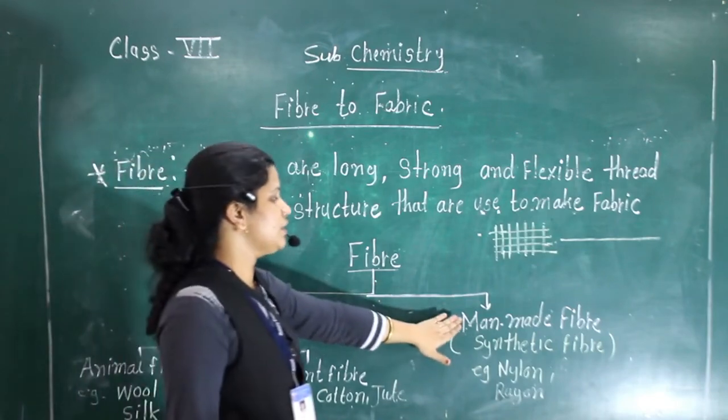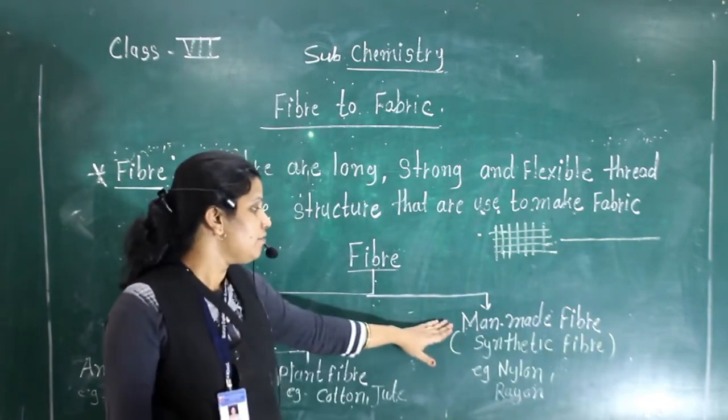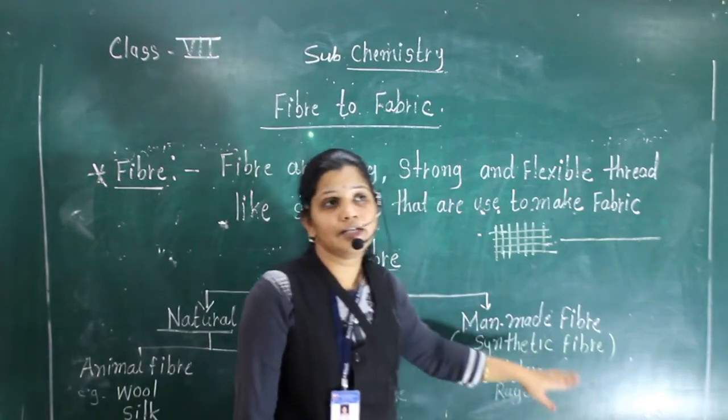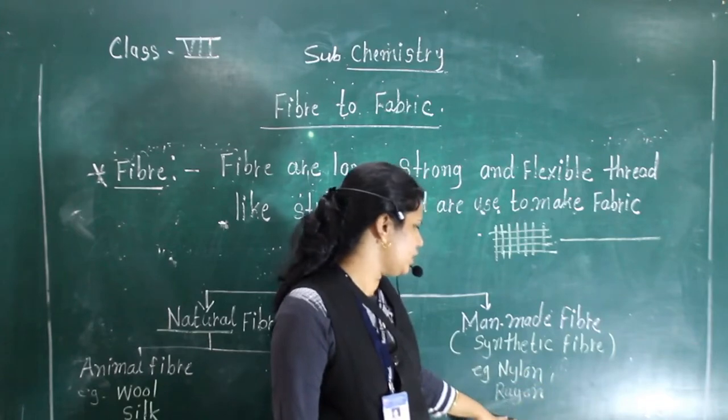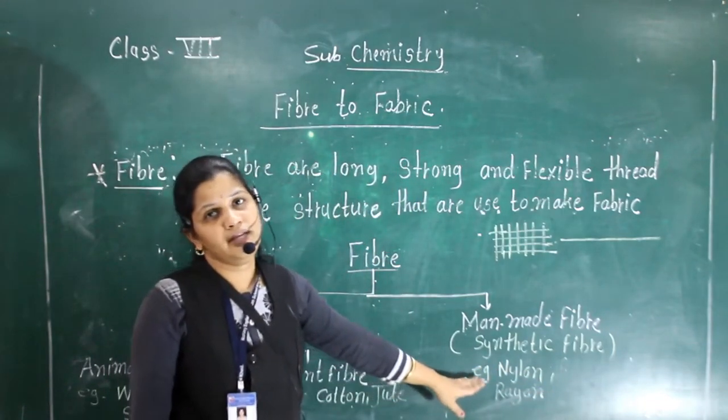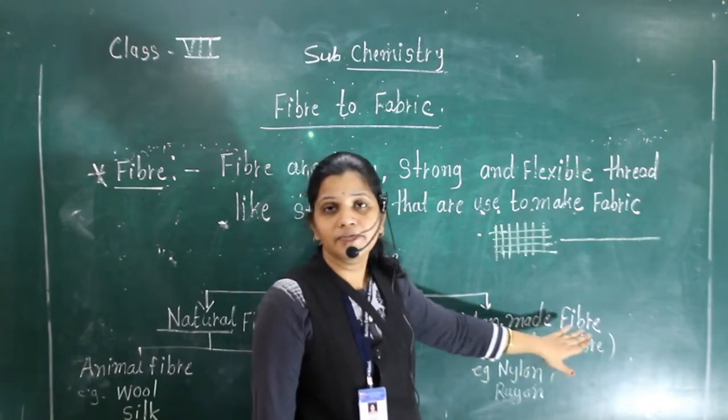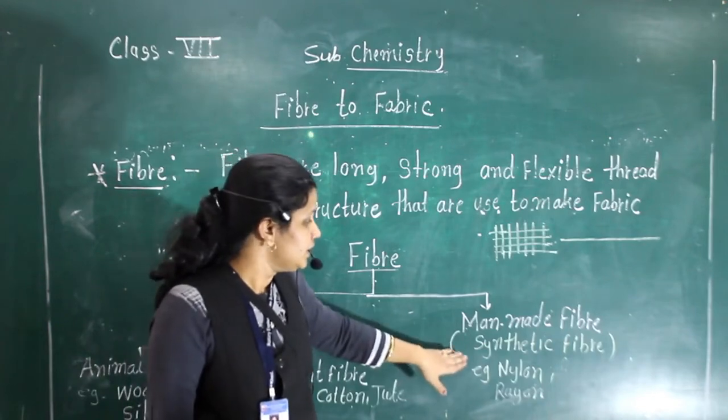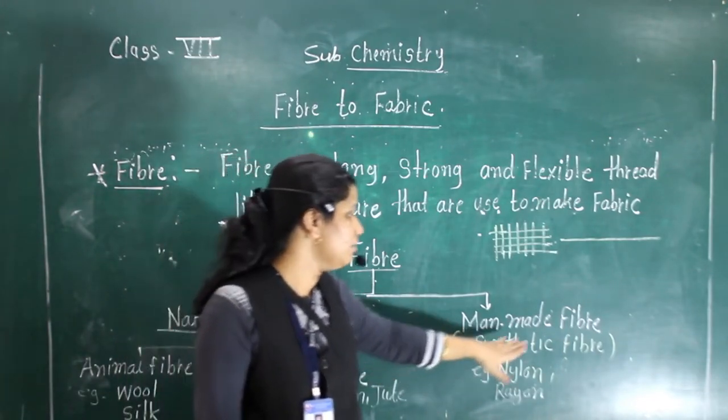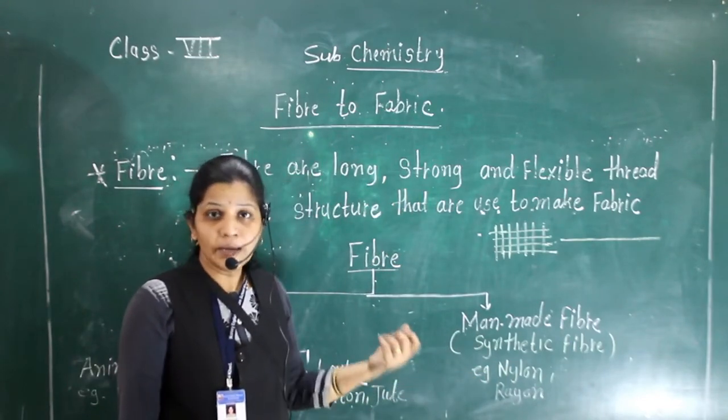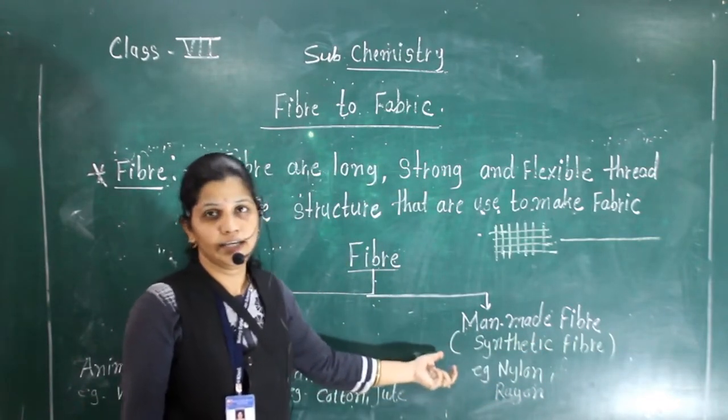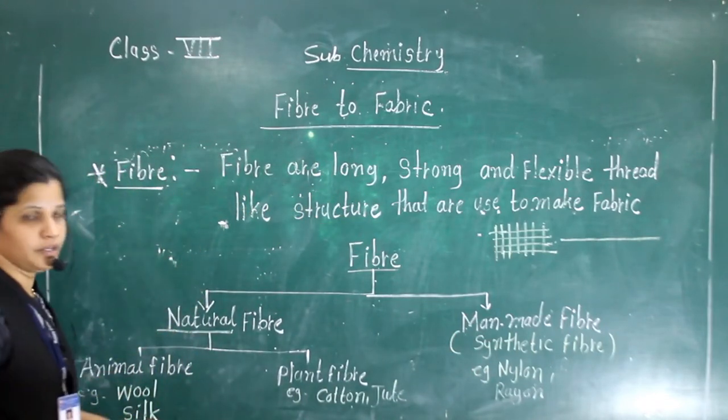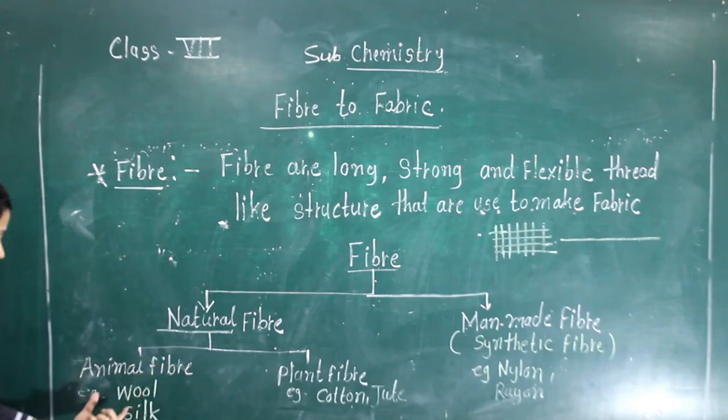These are the two types of natural fiber. Now another type is man-made fiber. Man-made fiber is also known as synthetic fiber. It is artificial, it means it is made by man. Nylon, polyester, and so many examples are there in man-made fiber. These fibers we make using different chemicals. These man-made synthetic fibers we will learn in higher class.